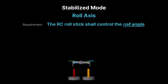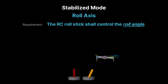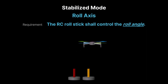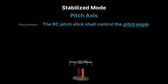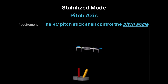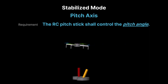In stabilized mode, the RC stick controls the quadcopter's roll angle, allowing the operator to tilt the drone sideways. The autopilot helps stabilize the roll, ensuring the quadcopter returns to level when the stick is released. The RC stick also controls the quadcopter's pitch angle, allowing the operator to tilt the drone forward or backward. The autopilot helps maintain stability, ensuring the drone levels out when the stick is released.